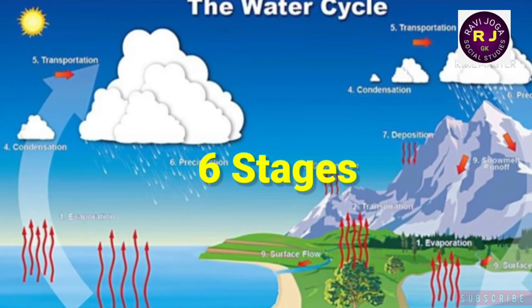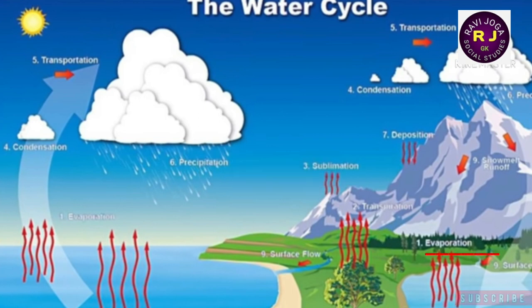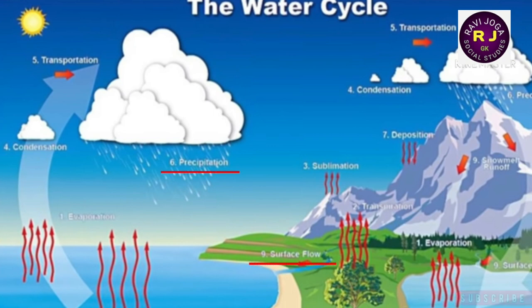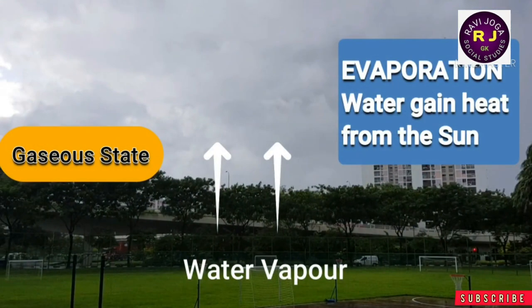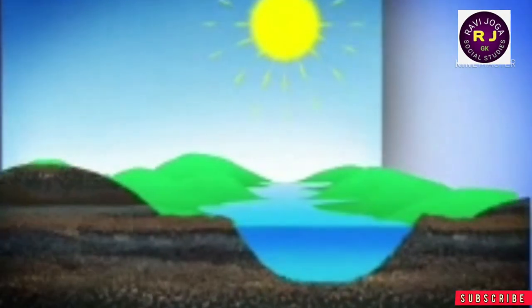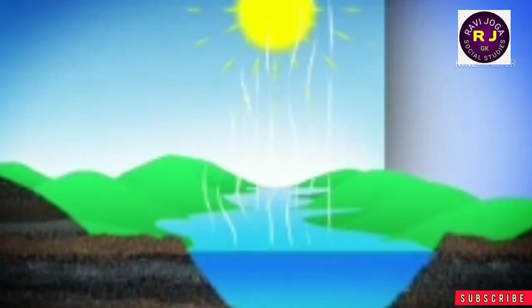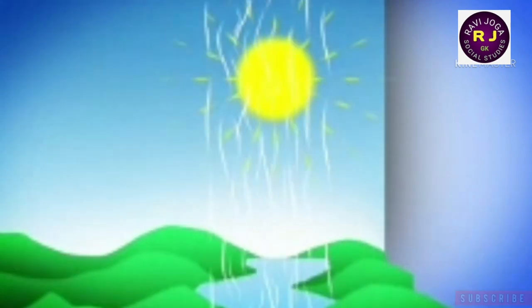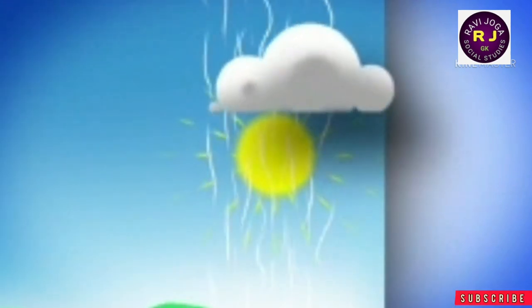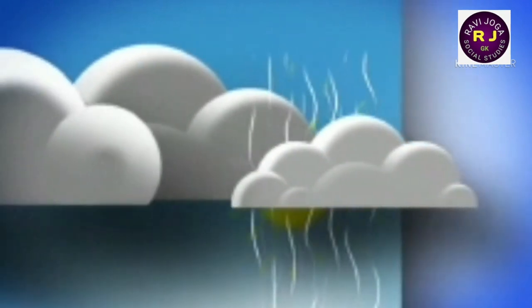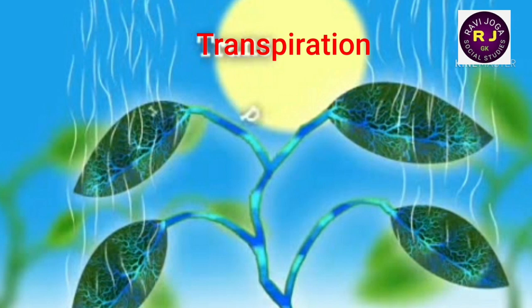The water cycle has six stages: evaporation, transportation, condensation, precipitation, runoff, and groundwater. Evaporation is a process by which water changes from liquid to gas. The sun heats up and evaporates water from water bodies like lakes, rivers and oceans, transferring water from the earth's surface to the atmosphere. Plants also release water to the air through the transpiration process.